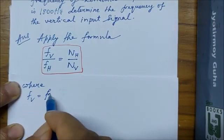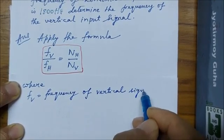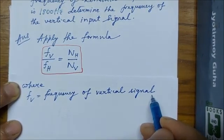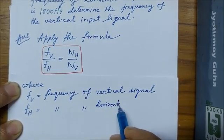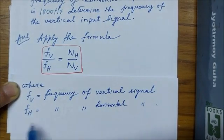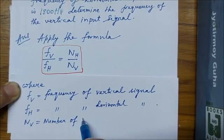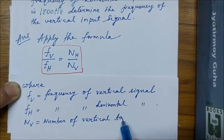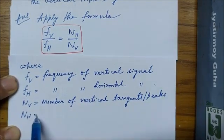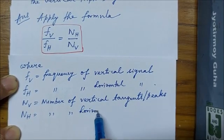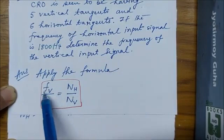Where, let us define these terms. fᵥ is the frequency of vertical signal, that is vertically applied signal, that is applied to vertical plates. fₕ is the frequency of horizontal signal, that is signal applied to horizontal plates. Nᵥ is the number of vertical tangents or peaks, and Nₕ is the number of horizontal tangents or peaks. We have to find the frequency of vertical input signal, that is fᵥ, so we can write...